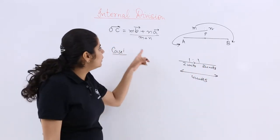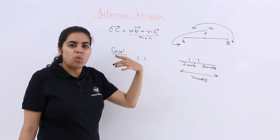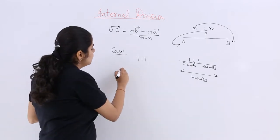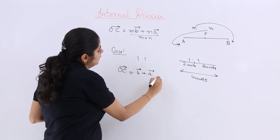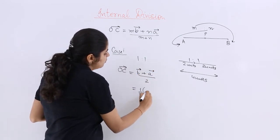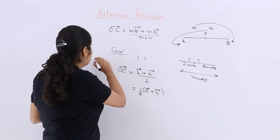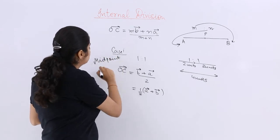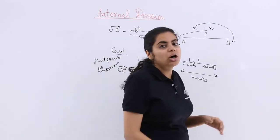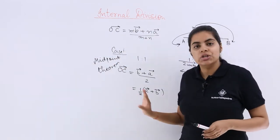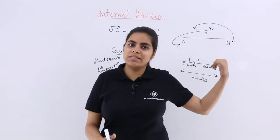So how to do that? Simply in this particular formula, you have to put value of M and N as 1 and 1 respectively. Then what should be the answer? Then OC vector is equal to B vector plus A vector upon 2 or half multiplied by A vector plus B vector. So that is specifically called as the midpoint theorem. Midpoint theorem you already studied earlier. Now we are studying in context through the vectors. So that is how we study the midpoint theorem of vectors with the help of the particular section formula that we have.